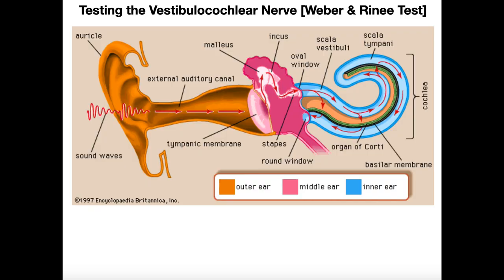When we're doing the Weber and Rinne tests, what we're really doing on a physiological level is diagnosing whether there's a problem in the inner ear or in the middle ear. In the middle ear, we have four structures that transmit sound waves into the inner ear: the tympanic membrane, the malleus, the incus, and the stapes. The latter three are our auditory ossicles. Damage to the tympanic membrane or the auditory ossicles results in conductive hearing loss, because the purpose of these structures is to conduct sound waves from the external ear into the fluid of the inner ear.